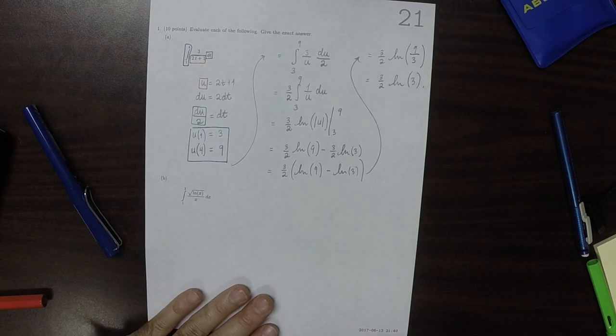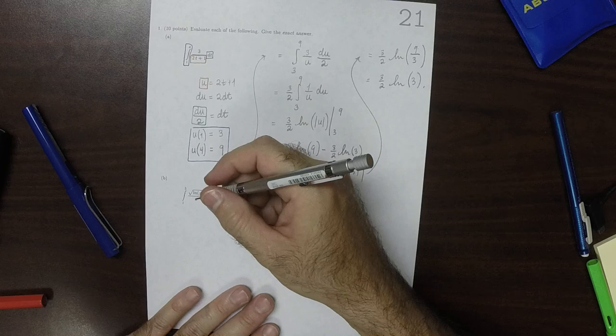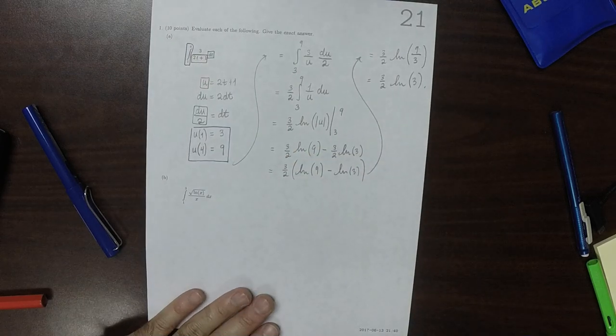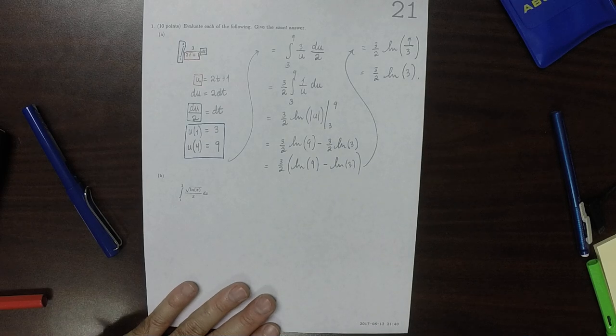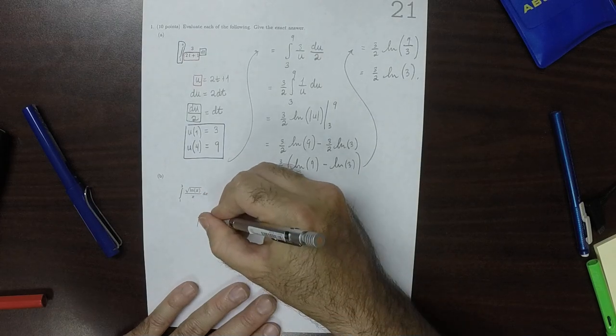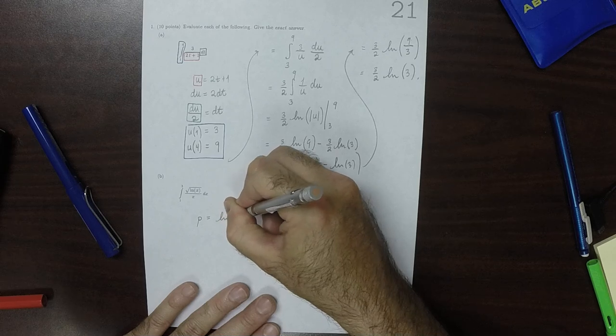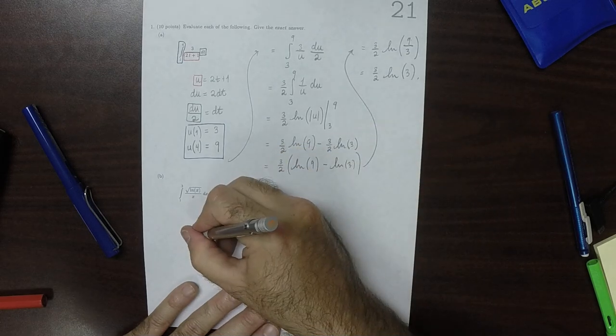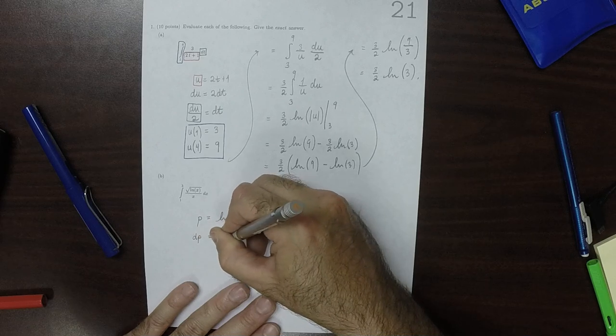As for this one, we'll do another substitution. Just to make sure you don't get too attached to u being the substitution letter, let's use some other substitution letter. How about p? So let's say p is the log of x, and then dp is 1 over x dx.